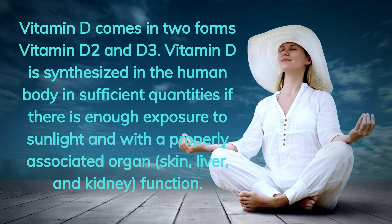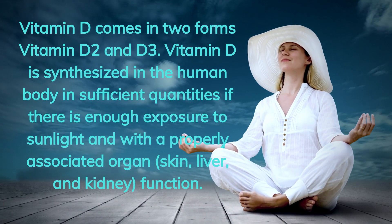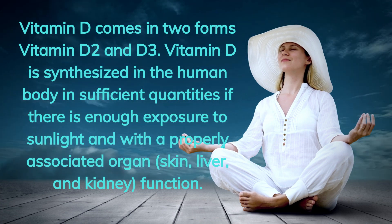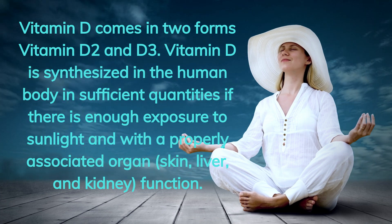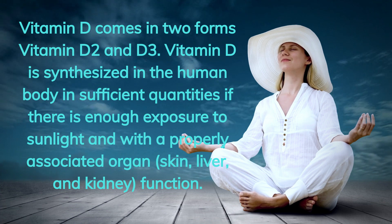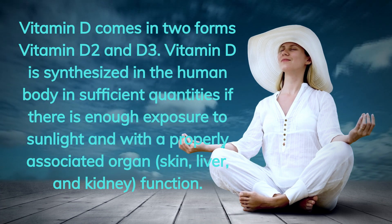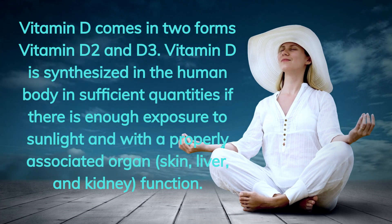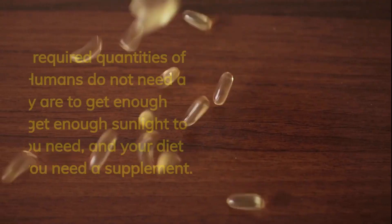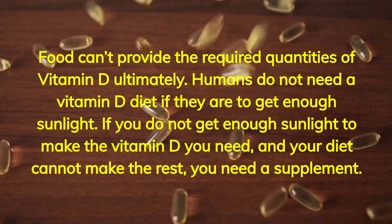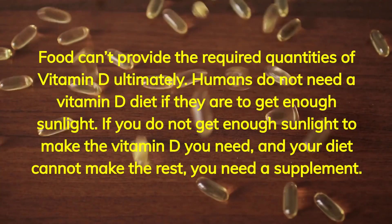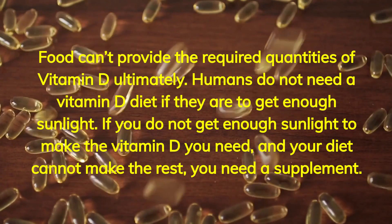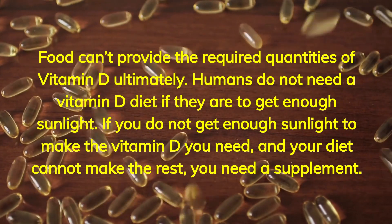Vitamin D comes in two forms: vitamin D2 and D3. Vitamin D is synthesized in the human body in sufficient quantities if there is enough exposure to sunlight and with properly associated organ function such as skin, liver, and kidney. Food cannot provide the required quantities of vitamin D ultimately. Humans do not need a vitamin D diet if they get enough sunlight.